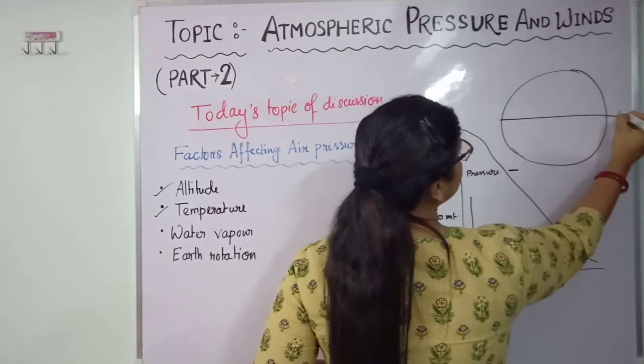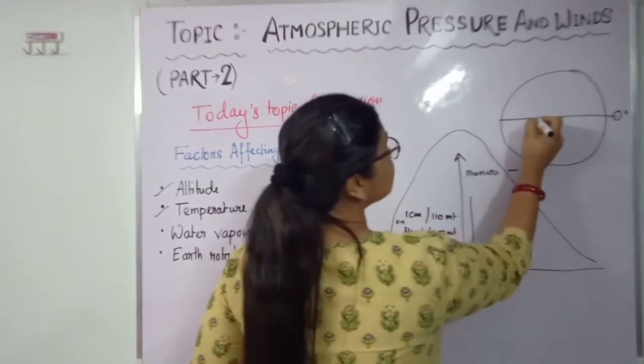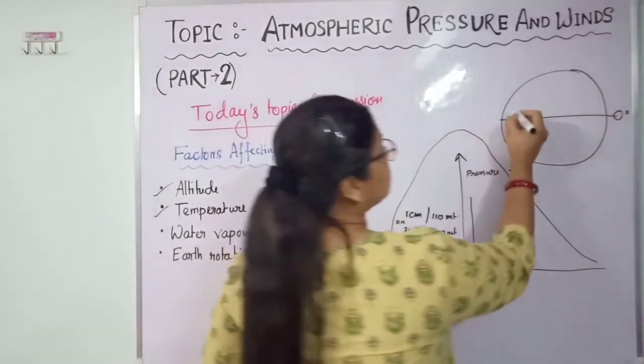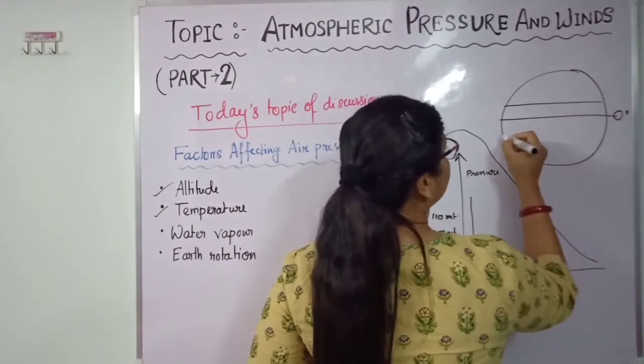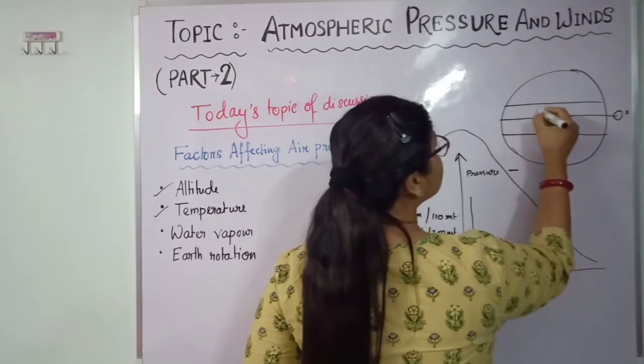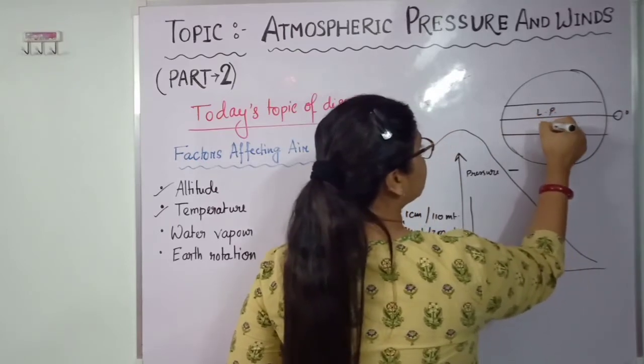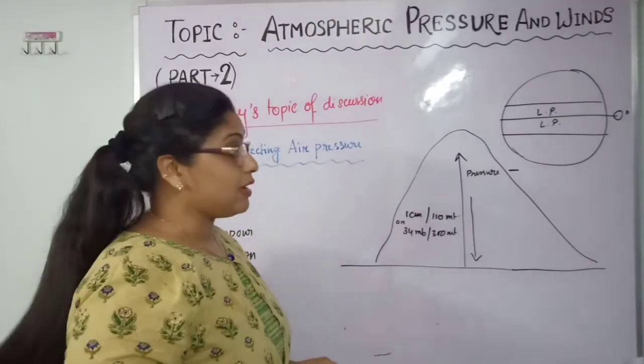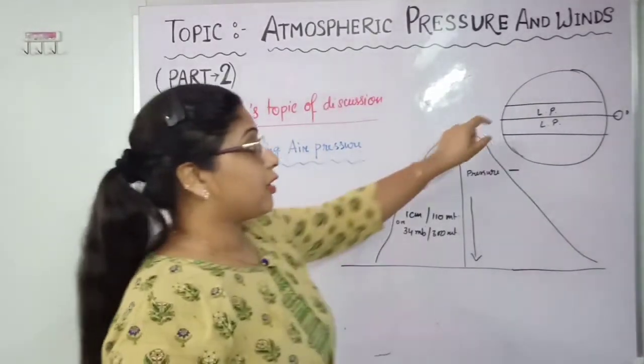If this is, just imagine, this is the equator. And we all know over this equator the sun always rises vertically. Due to that, near the equator area, we always see a low pressure zone because of having more temperature and having low pressure.